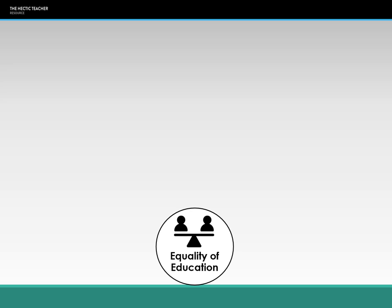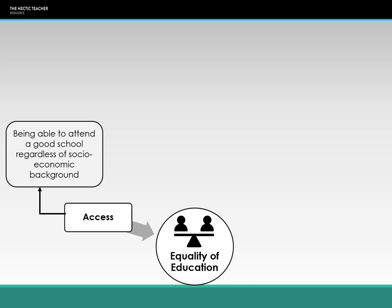There are four types of equality for education. The first type is access — the idea that all students should be able to access a good school regardless of their socio-economic background. It doesn't matter if you're working class, middle class, or upper class; you should be able to have access to good state education. Social policies only apply to state schools, so we need to look at the policies that have meant students are able to access good quality schools regardless of their background.